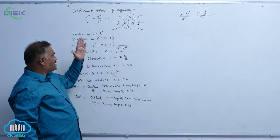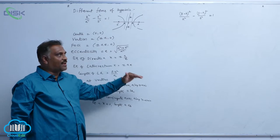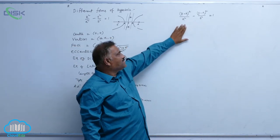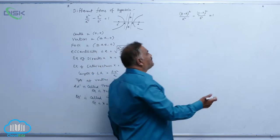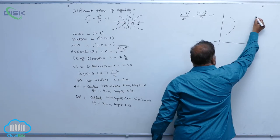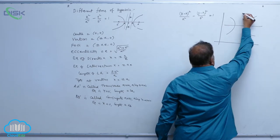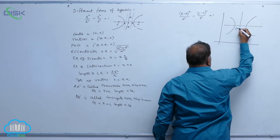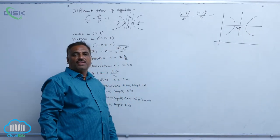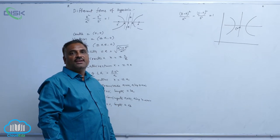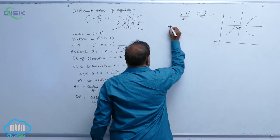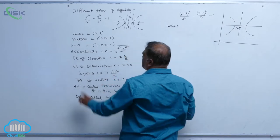The conjugate axis has equation x = 0 and length 2b. Now observe one logic: when the center is (0, 0) and is shifted to some point (h, k), the equation transforms accordingly. This means the coordinate axes shift and we have the hyperbola with center at (h, k) — this is a shifting of the origin from one point to another without changing the direction of the axes.